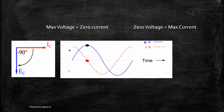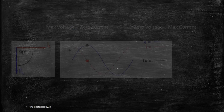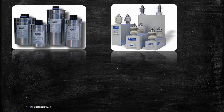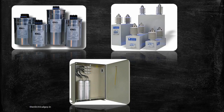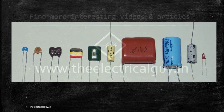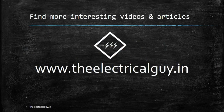I hope the concept of how a capacitor keeps the voltage constant and why you always get a leading current through a capacitive circuit is clear. Here are some practical images of capacitors. These capacitors are generally used for power factor correction as well as for voltage regulators.